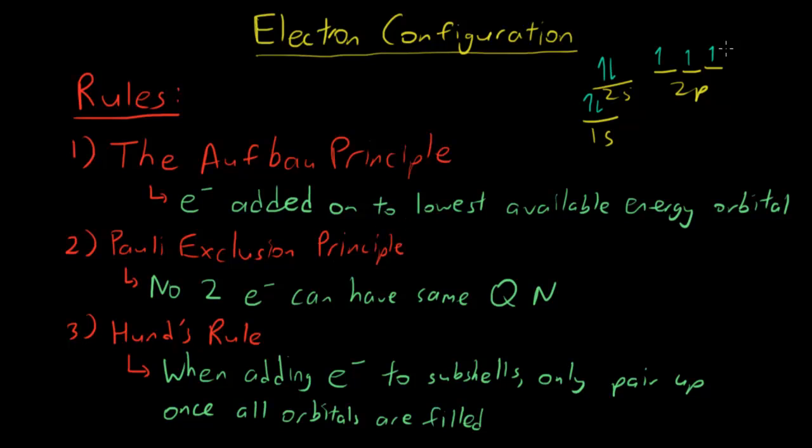And Hund's rule says that when adding electrons to a subshell, and remember a subshell is basically this p orbital right here, when we're adding on electrons to a subshell, we add on one first and we don't pair up. The reason why we don't pair up is because of Hund's rule, which says that when adding on electrons to a subshell, we only pair them up once all the orbitals are filled. All the orbitals aren't filled yet because we have two empty orbitals. So according to Hund's, we have to fill these out with electrons, then we can start pairing up the electrons.